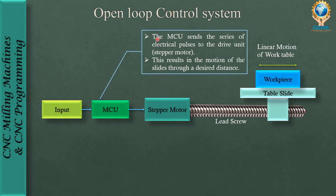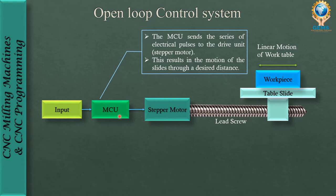The MCU sends a series of electrical pulses to the drive unit or stepper motor. The program received from the input device is decoded into machine-understandable format and sent to the MCU. The MCU understands the format and produces a series of electrical pulses sent to the drive system — the stepper motor — which moves the lead screw according to the desired value fed from the input system.